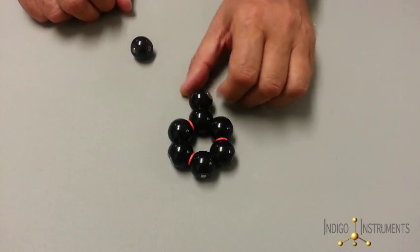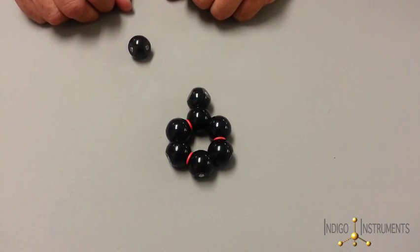By adding another methyl group we have toluene.